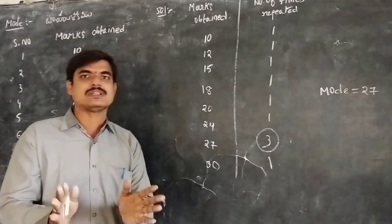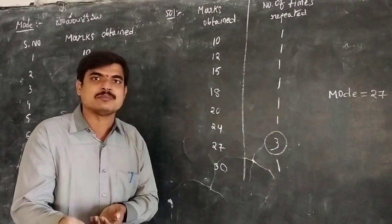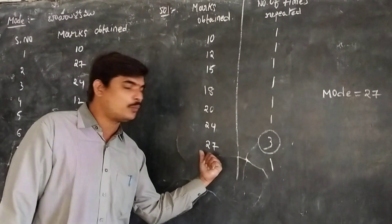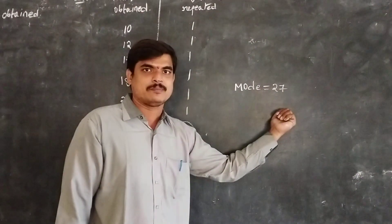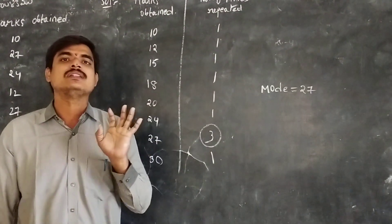If you are finding the mode in individual series, the number of items which repeats n number of times is called mode. In this case, 27 is the value which repeats 3 times. That is why the value of the mode in this case is 27. This is regarding the individual series.